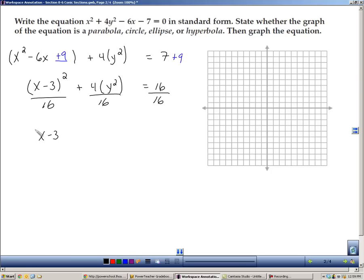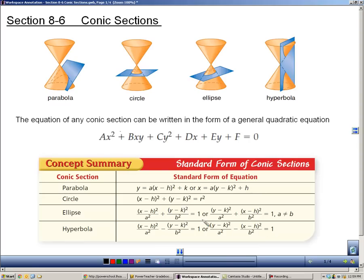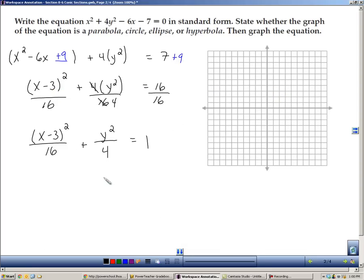So I end up with (x - 3)² over 16, and then I'm going to have the y squared. I'm going to cancel that, leaving a 4 on the bottom, and then that's going to equal 1. So now I have no coefficients in front of my squares, which is what I want. And now I can go back and see which one equals 1 and has a plus sign. So I know that this equation that I'm working on is going to form an ellipse.